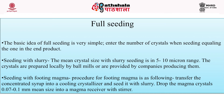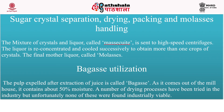For seeding with footing magma: transfer the concentrated syrup into a cooling crystallizer and seed it with slurry; drop the magma crystals (0.07 to 0.1 mm mean size) into a magma receiver with a stirrer; use the magma to seed a vacuum pan containing concentrated syrup; continue crystallization up to 0.25 to 0.3 mm mean crystal size; then use the second magma to seed the product pan.